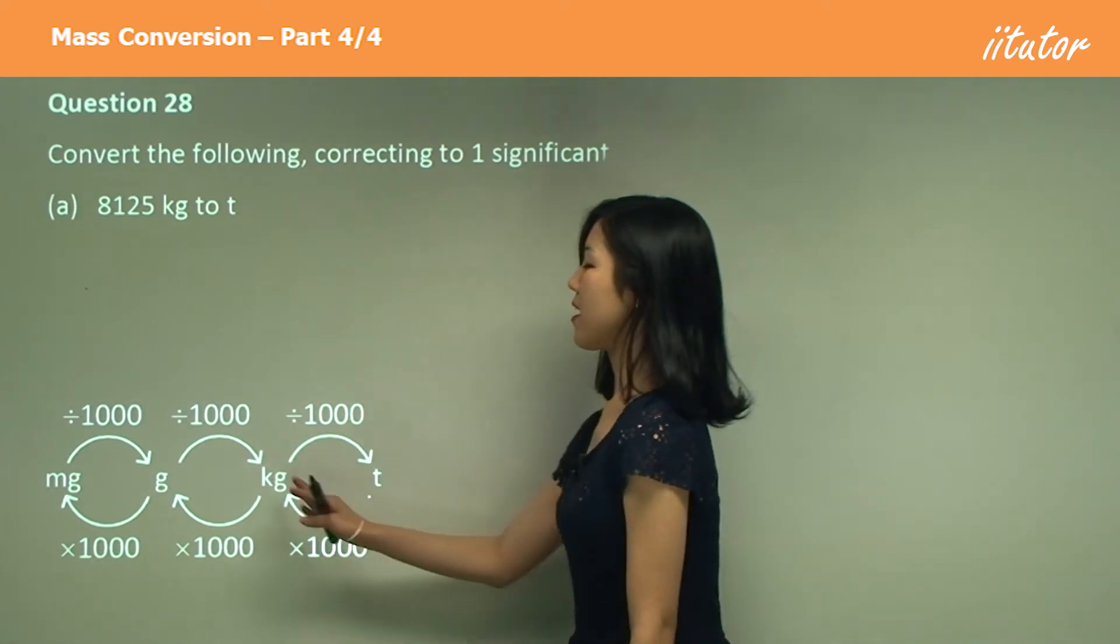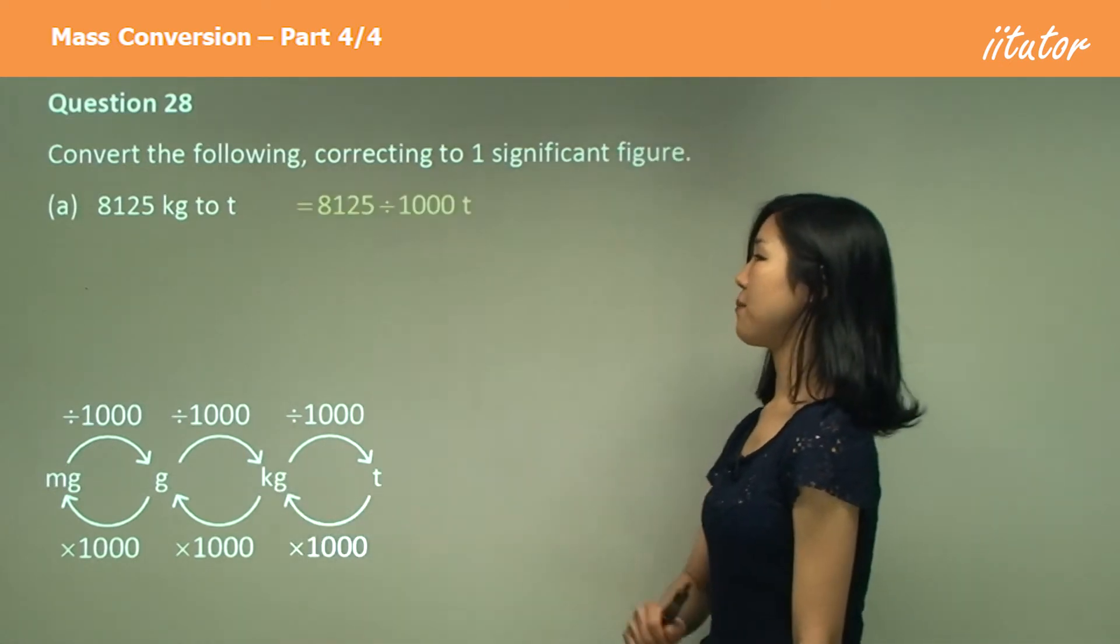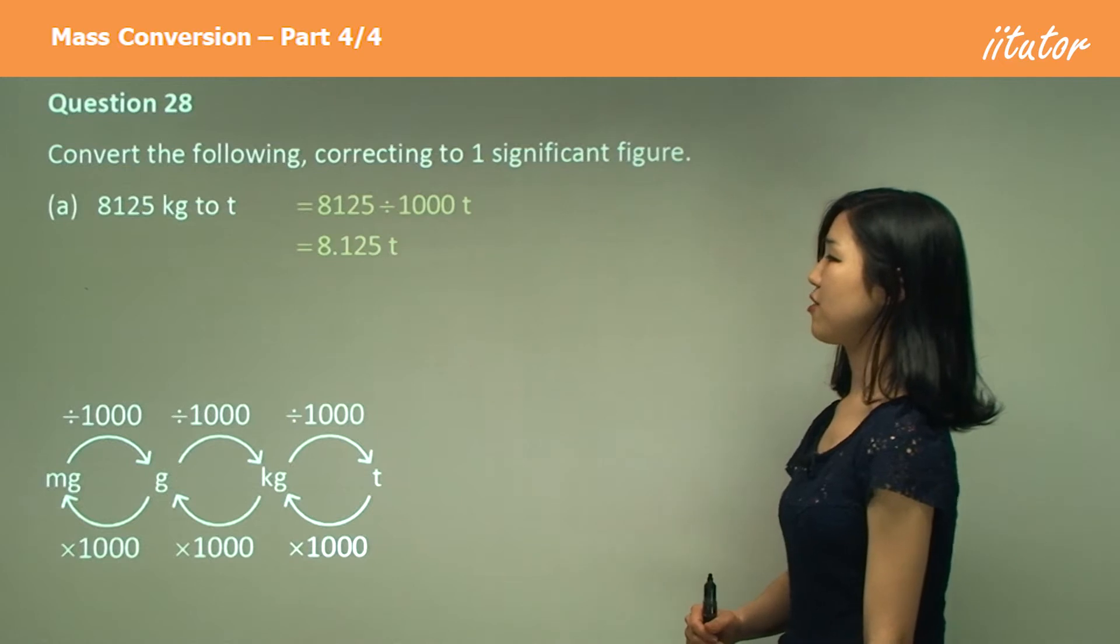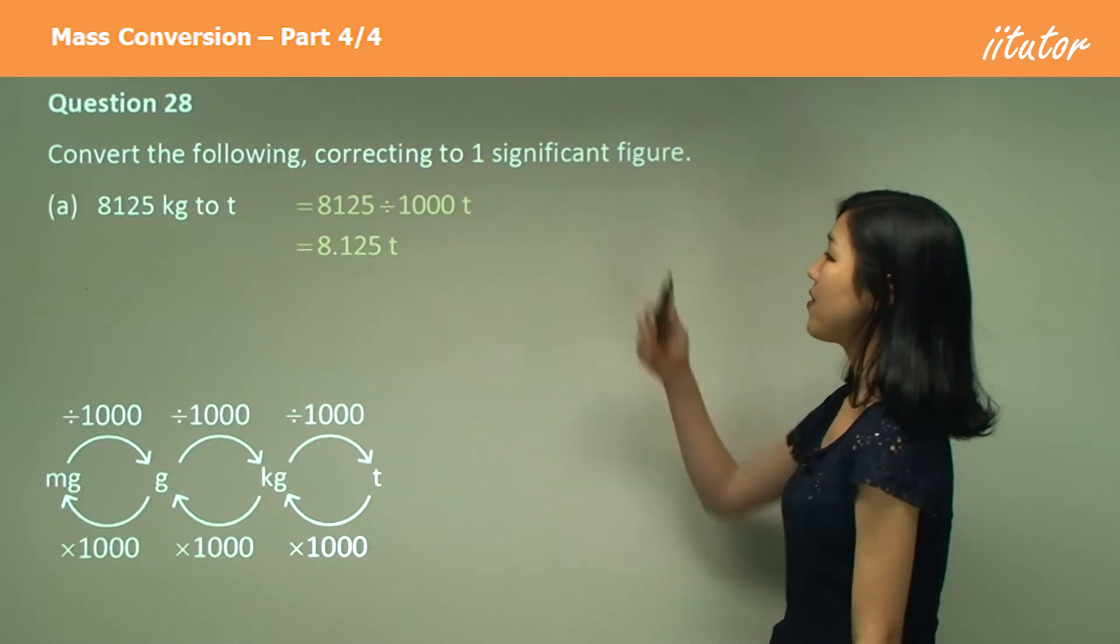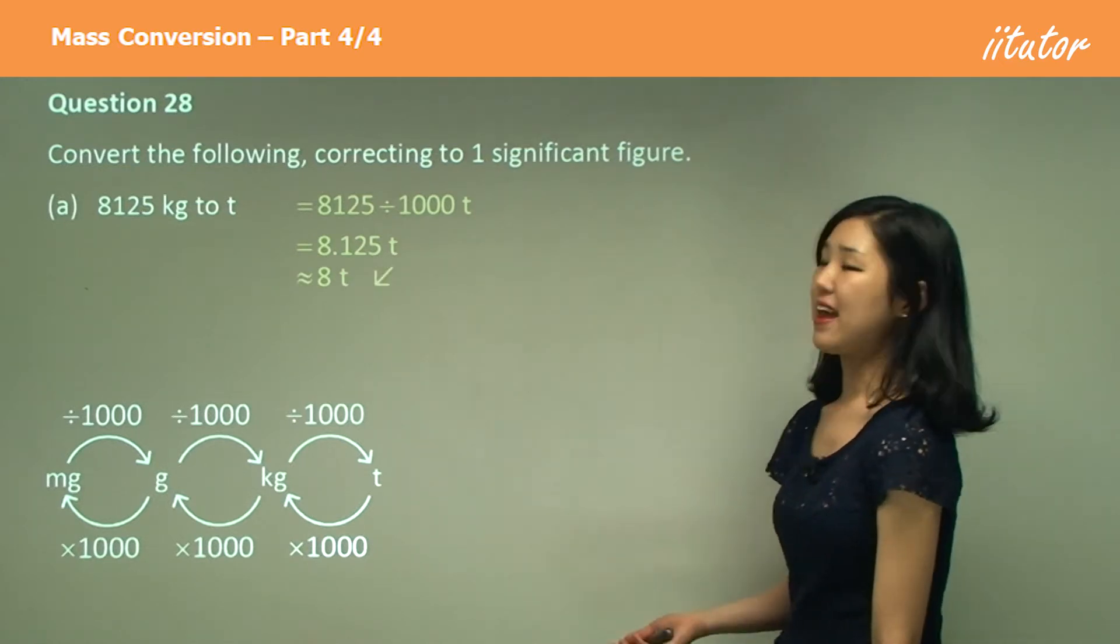Kilograms to tons, it's the opposite way. Small to large, we divide by a thousand, which gets you something like this. And it says one significant figure, so simply eight, okay?